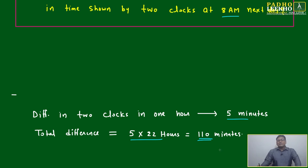110 minutes, this is the difference that will be shown at 8 AM. Which watch will show what time at that point? Here, no need to calculate. The question is only asking to find total difference.